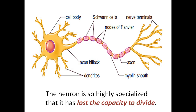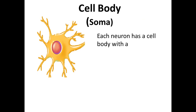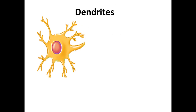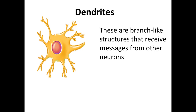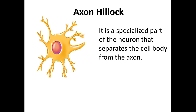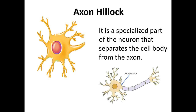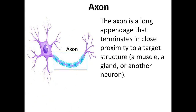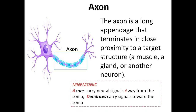Let's discuss all the parts of a typical neuron one by one. The first part is the cell body, or soma. Each neuron's cell body contains a nucleus, Golgi body, endoplasmic reticulum, mitochondria — the powerhouse of the cell — and ribosomes, which help make proteins. The second part is dendrites, which are like branches of a tree; their main function is to receive messages from other neurons. The axon hillock separates the cell body from the axon and helps in initiating a nerve impulse. The axon is a long tube-like structure that can end in another neuron, a muscle, or a gland. Axons always carry neural signals away from the cell body, whereas dendrites always carry signals towards the cell body.